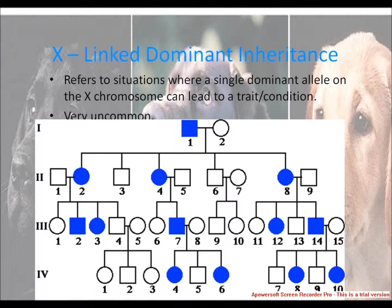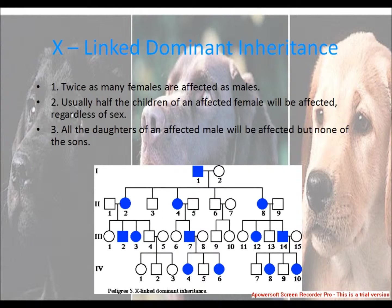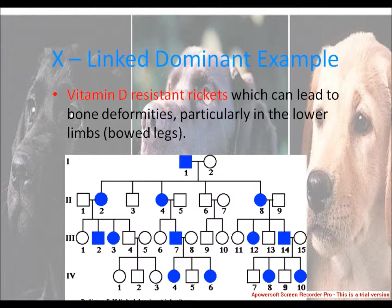X-linked dominant inheritance: the trait does not skip generations. Affected males must come from affected mothers. Approximately half the children of an affected heterozygous male are affected. Affected females come from an affected mother or father. All daughters but none of the sons of an affected father are affected. An example is vitamin D-resistant rickets, which can lead to bone deformities, particularly in the lower limbs.